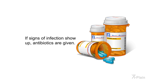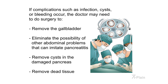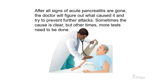If signs of infection show up, antibiotics are given. If complications such as infection, cysts, or bleeding occur, the doctor may need to perform surgery to remove the gallbladder, eliminate other abdominal problems that can imitate pancreatitis, remove cysts, or remove dead tissue from the damaged pancreas. After all signs of acute pancreatitis are gone, the doctor will determine what caused it and try to prevent further attacks.